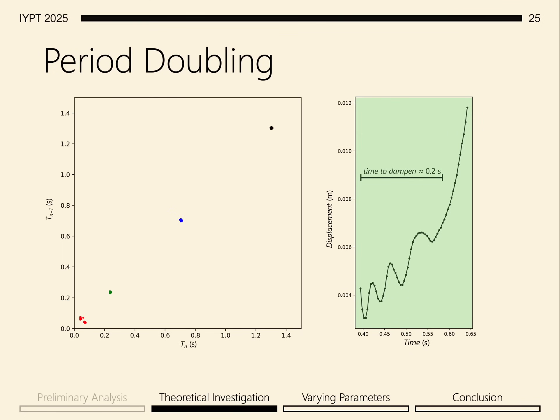Looking again at our Poincare diagram, we can explain why the time to dampen is so significant. For very high flow rates, the time to form a droplet at a critical volume is very short, shorter than the time to dampen. This results in the oscillations affecting the droplet with great complexity, allowing us to observe period doubling at higher flow rates.